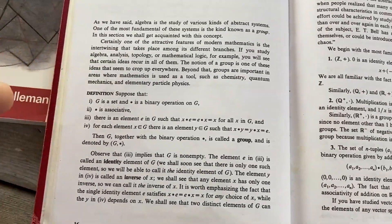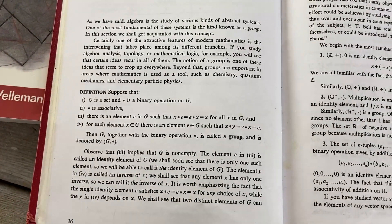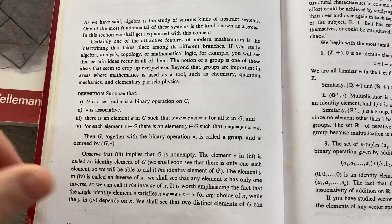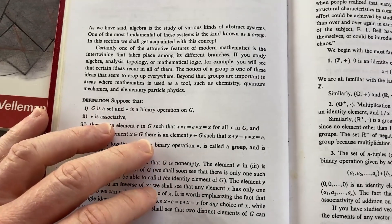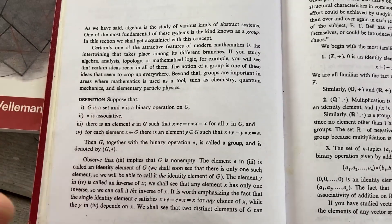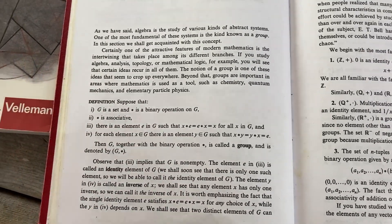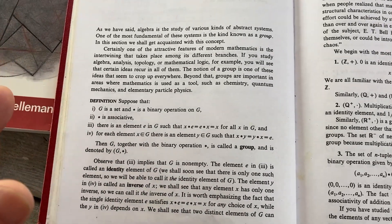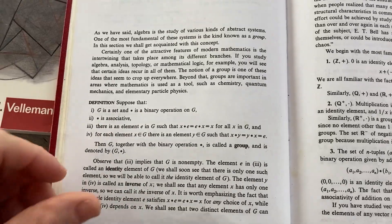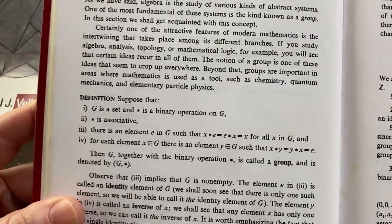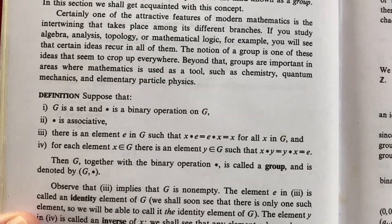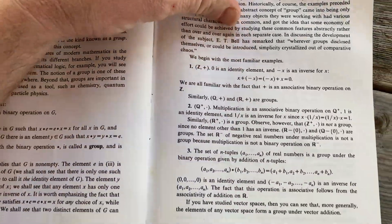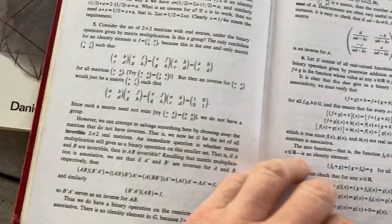A simple example of a group would be the set of real numbers under addition. Addition is a binary operation on the set of real numbers. It's associative. The identity element is zero because x plus zero is zero plus x and that's x. And for any element x we have the element negative x which when you add it to x you get zero. So the set of real numbers under addition is a group. Very easy to justify certain groups.